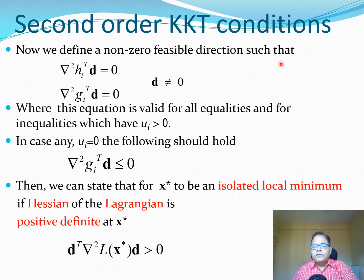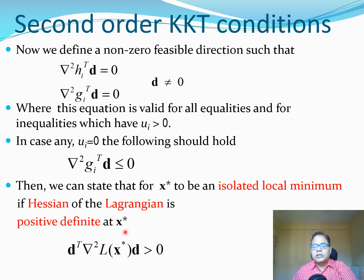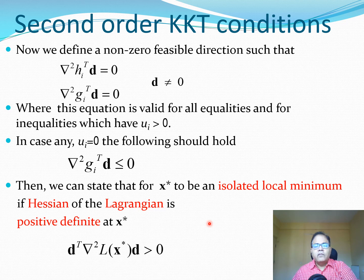We define a non-zero feasible direction d ≠ 0 such that two conditions hold: one equation is valid for all equality-type constraints, and the other applies to inequalities where u_i > 0. If any u_i < 0, certain conditions should hold there. We can then state that for x* to be a local minimum — or an isolated local minimum — the Hessian of the Lagrangian must be positive definite at x*. For certain problems this may be easy to prove, and for others it may be difficult.